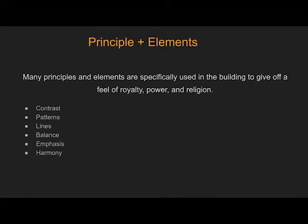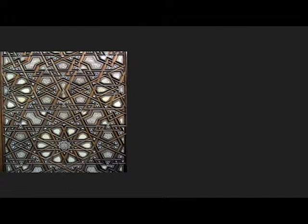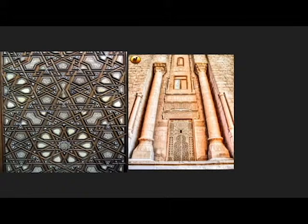Contrast is seen between the wooden doors, concrete, and crevices in the mosque. Balance is asymmetrical throughout the building, creating variety. Patterns are seen through the wooden doors and the concrete walls. Lines are used in the rooms made by the marble columns, making the room feel tall and magnificent.